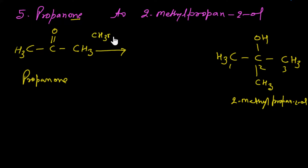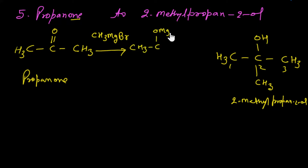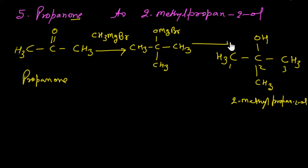When we add CH₃MgBr (Grignard reagent) to propanone, addition occurs at the carbonyl compound: MgBr attaches to oxygen and the alkyl group CH₃ attaches to the carbonyl carbon. This was the Grignard reaction. Then acid hydrolysis with H₂O is performed, and the OH group is obtained — giving 2-methylpropan-2-ol.